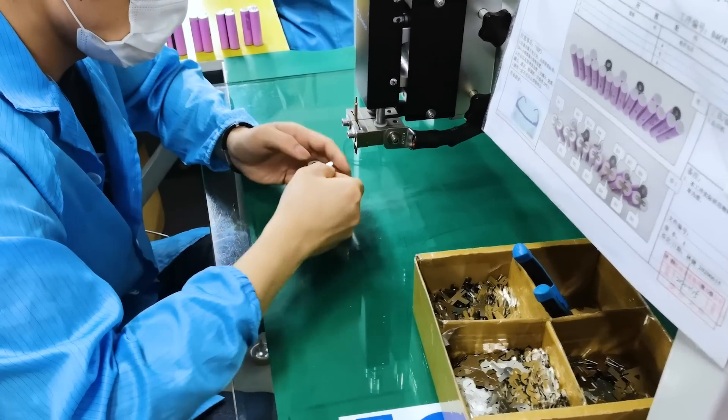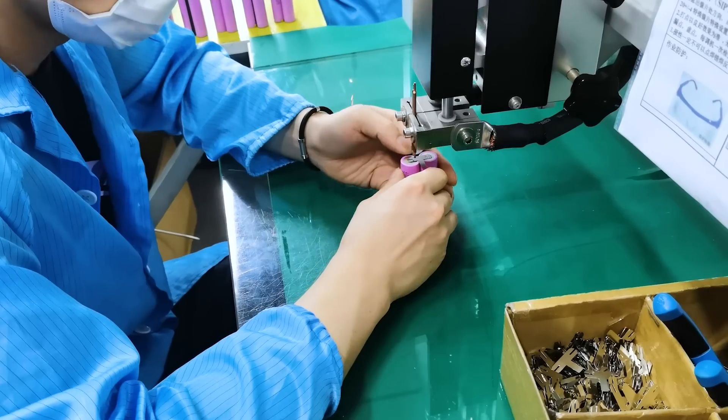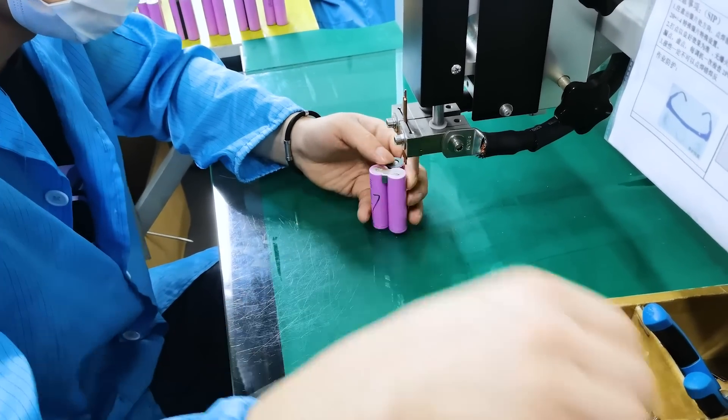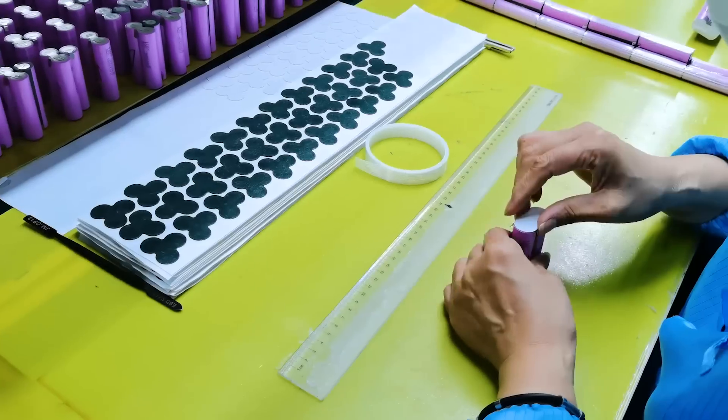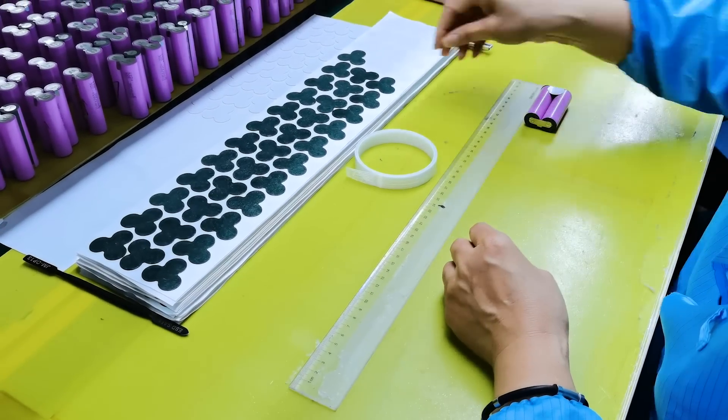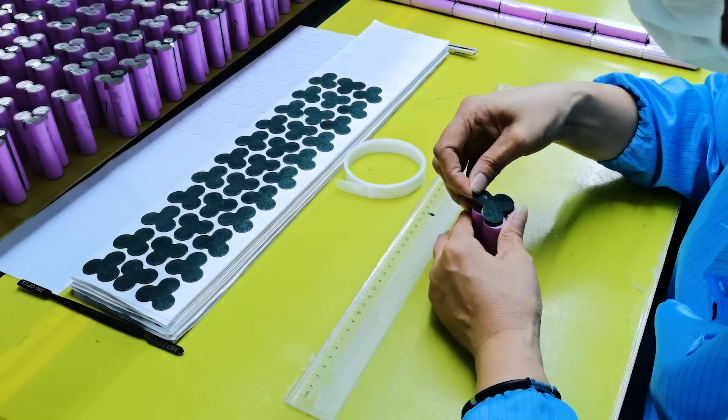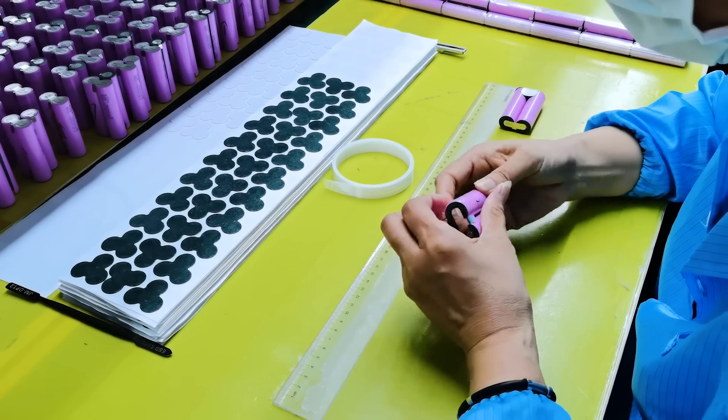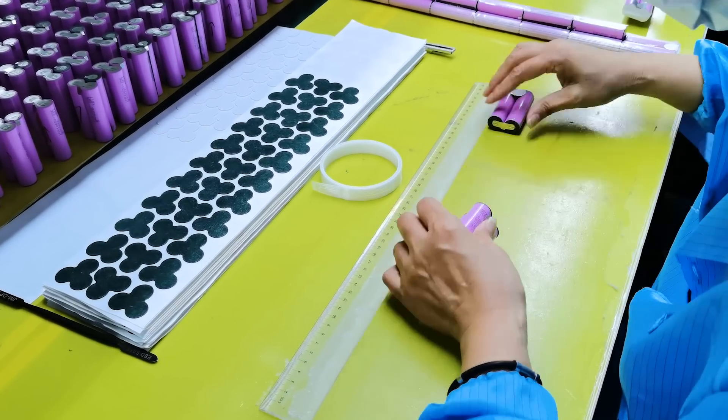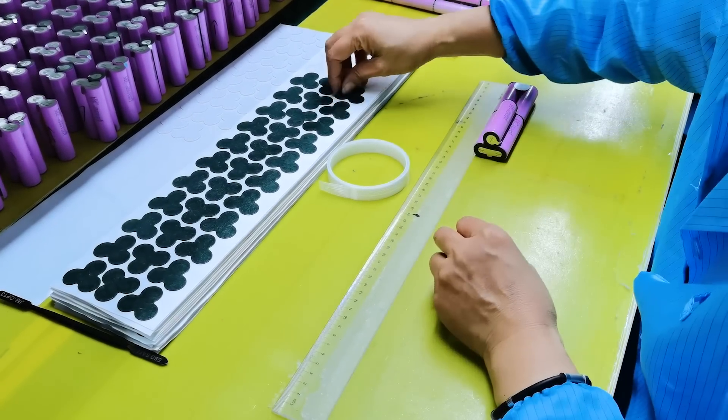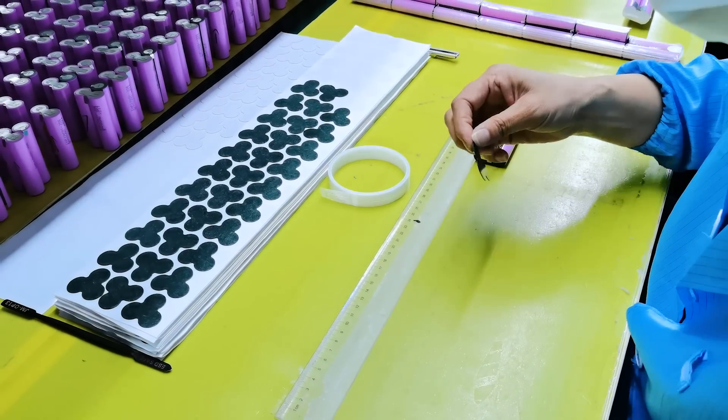One side gets a tab connecting the two and the other side gets its own tab. That's because it's a 10s 2p battery, which means there are 10 cells in series and two stacks of those in parallel. With the tabs welded onto the clusters, insulation is installed here.